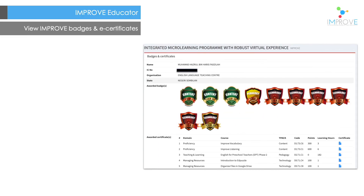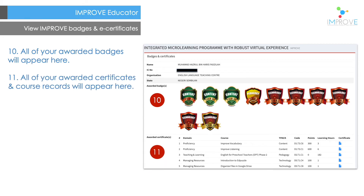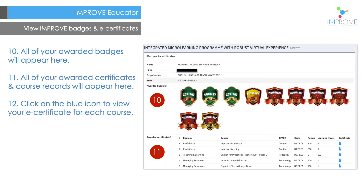This is how you can view your improved badges and e-certificates. All of your awarded badges will appear here. All of your awarded certificates and course records will appear here. Click on the blue icon to view your e-certificate for each course.